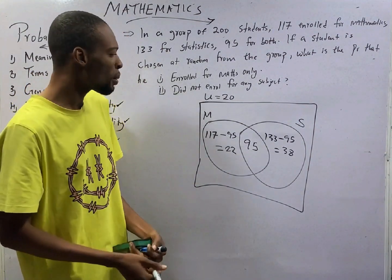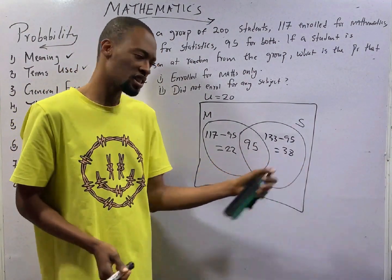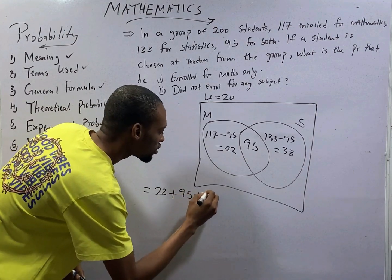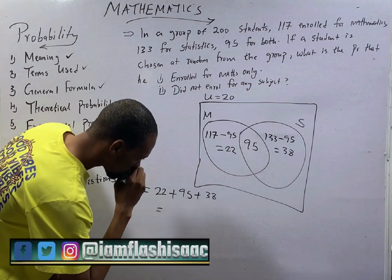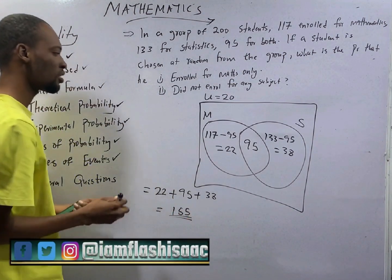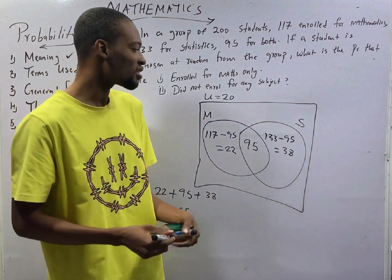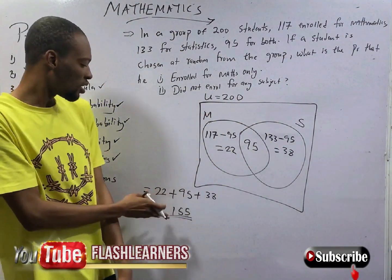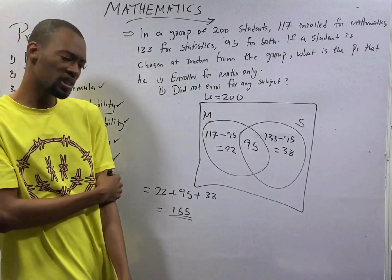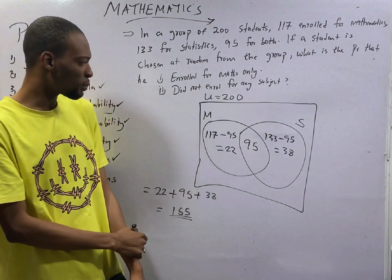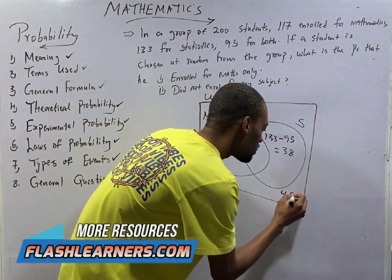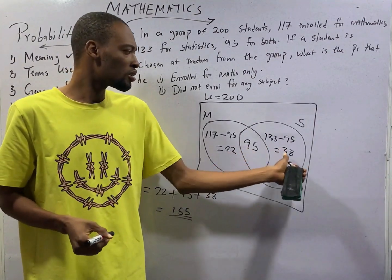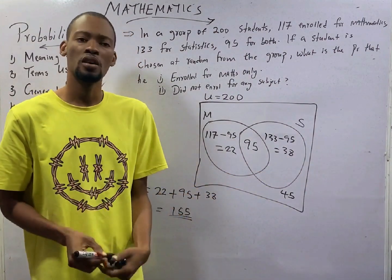Now let's add them. The number of those who enrolled for mathematics, both mathematics and statistics, and only statistics is equals 22 plus 95 plus 38. This should be 155 if I am correct. So 155 candidates registered for at least one of the two subjects. Look at this. We have 200 students in total. Now, out of the 200 students, only 155 registered math, statistics or both of them. This implies that 45 students did not register any of them. So what have we gotten so far? Total number of students, those who registered only math, those who registered both, those who registered only statistics, and those who did not enroll for any other subjects.